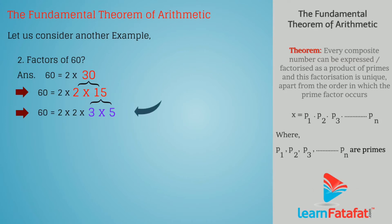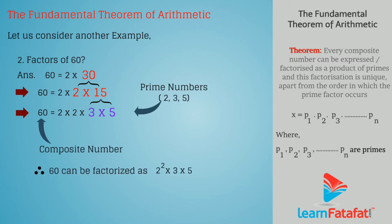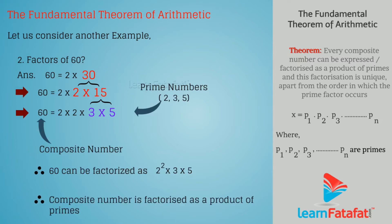In this example, 2, 3, and 5 are prime numbers and 60 is a composite number. 60 is factorized as 2 squared into 3 into 5, that is, the product of powers of primes.